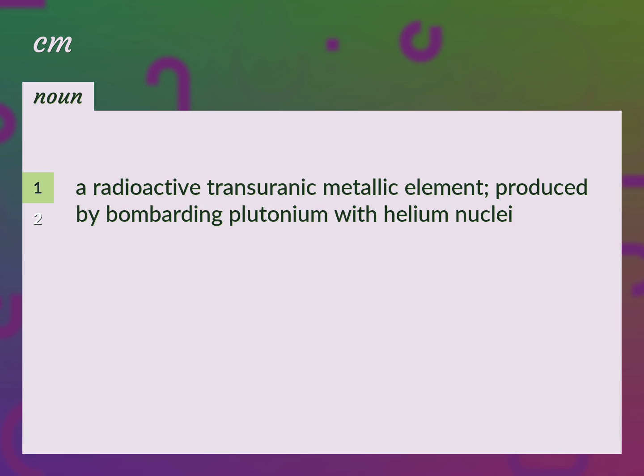A radioactive transuranic metallic element, produced by bombarding plutonium with helium nuclei. Atomic number 96, curium.